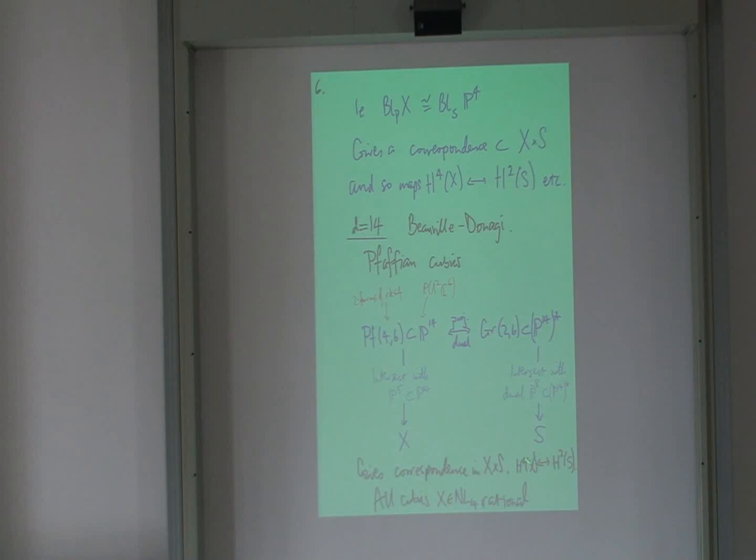And it gives you this map from homologies, which says that indeed, homologically, X looks like A. By the way, it's a bit too serious. And indeed, the work of Voisin shows that all these guys are rational, but I'm not going to go into that.